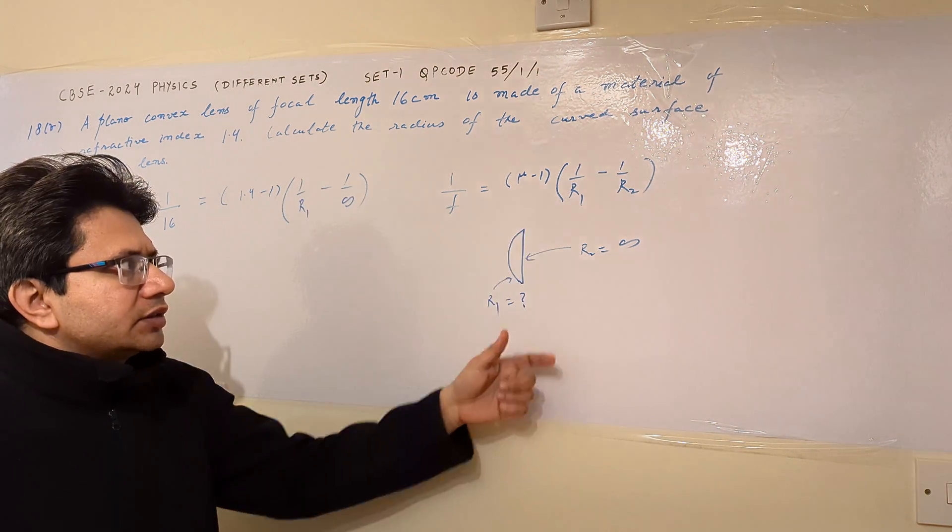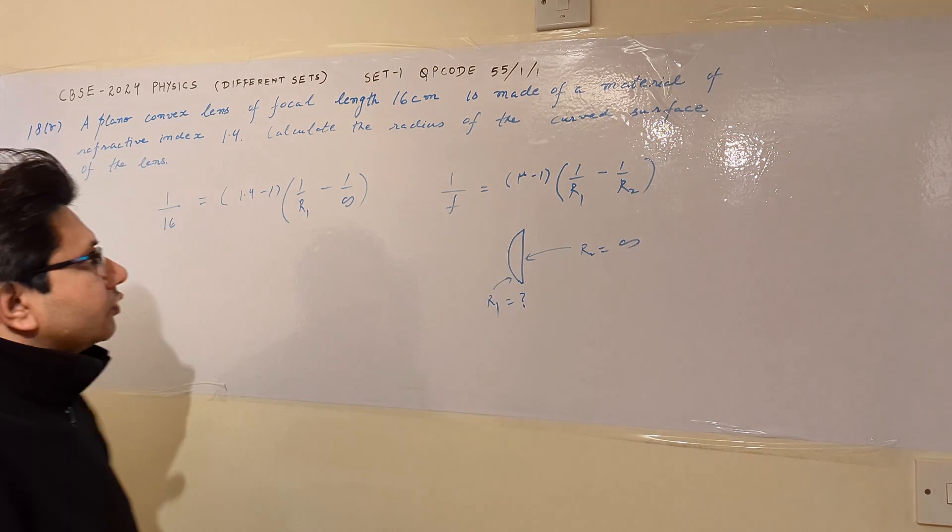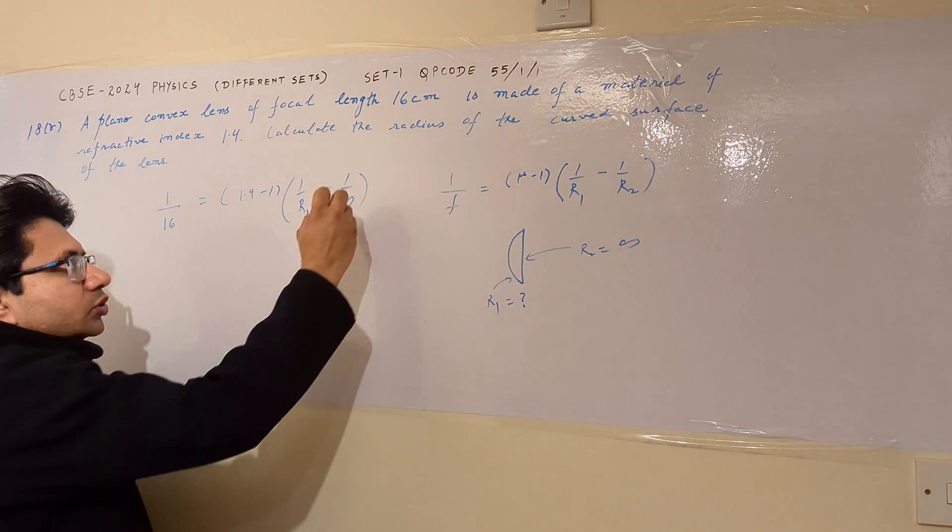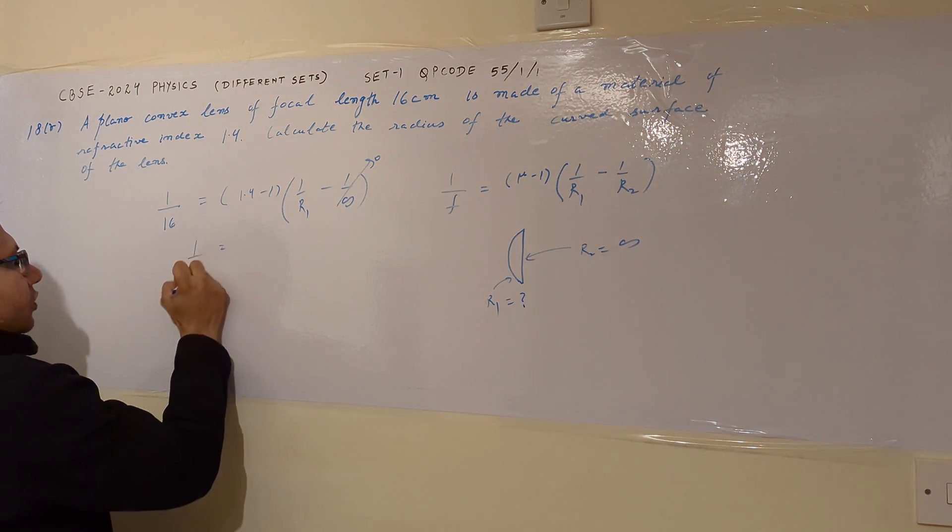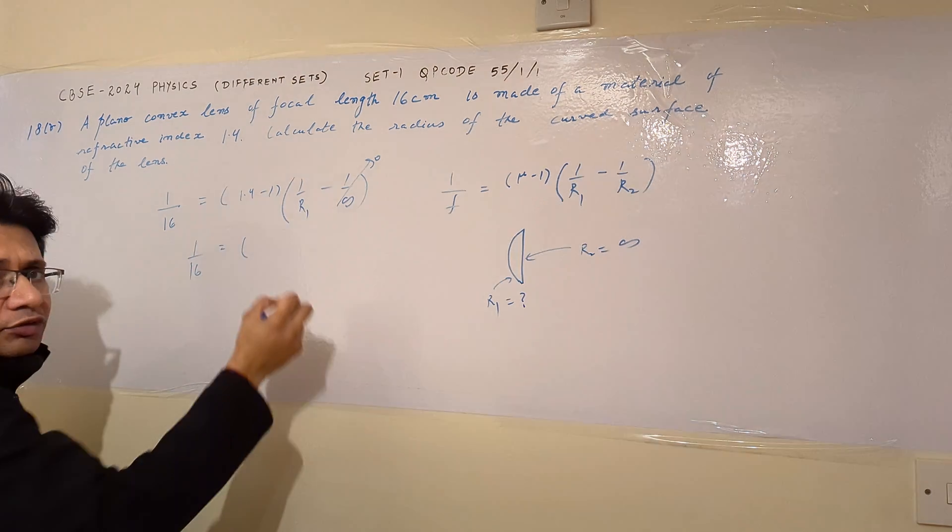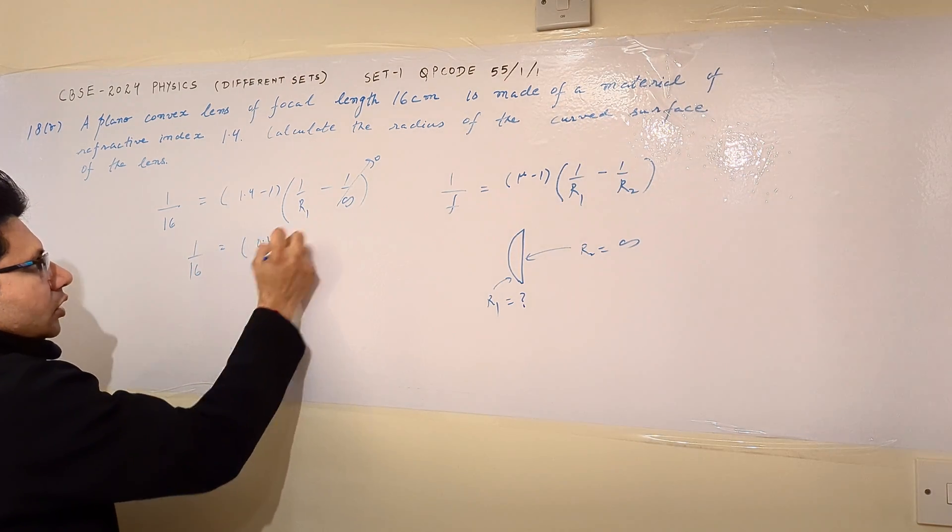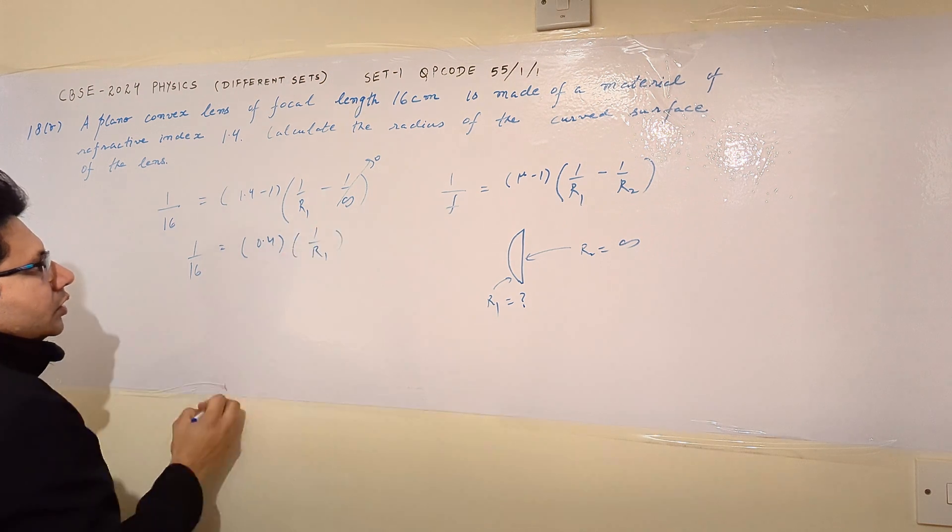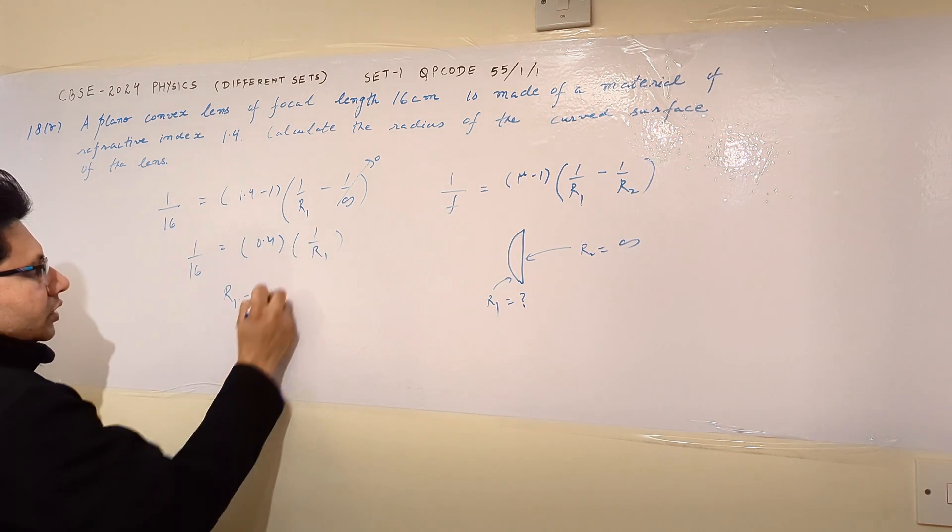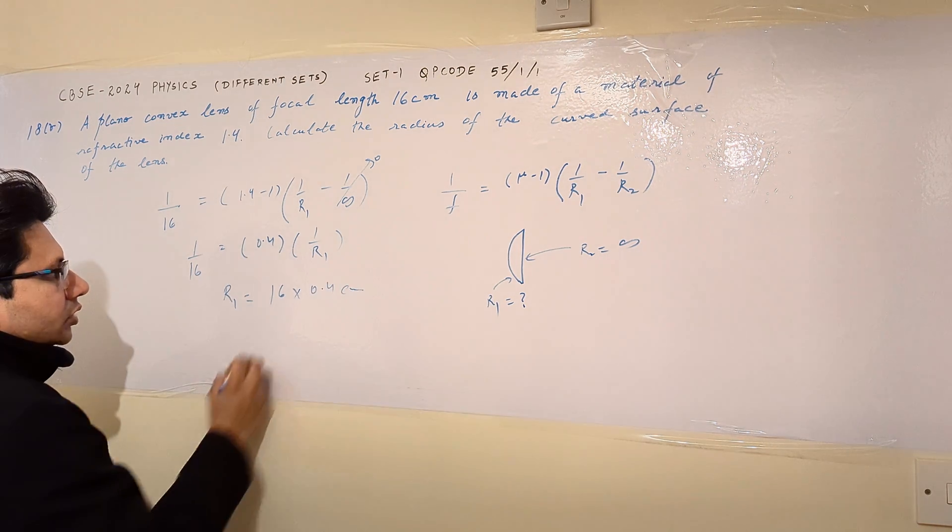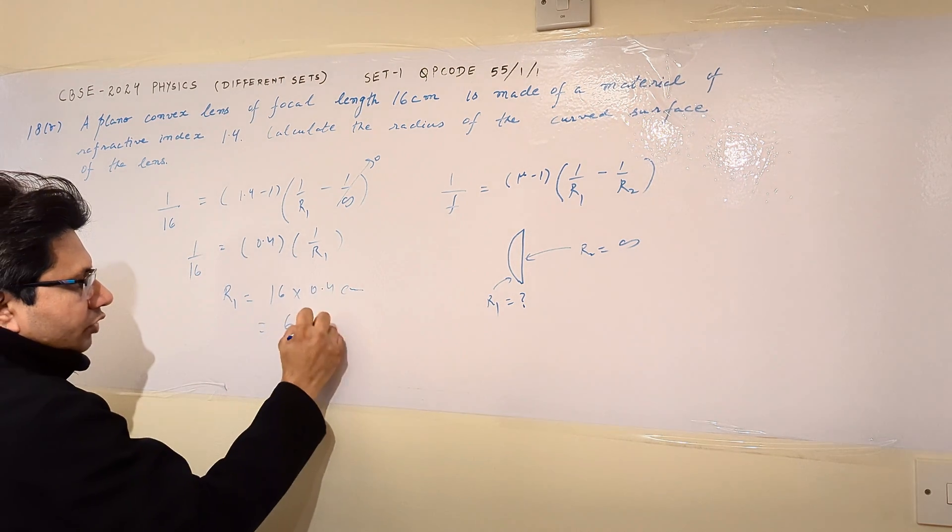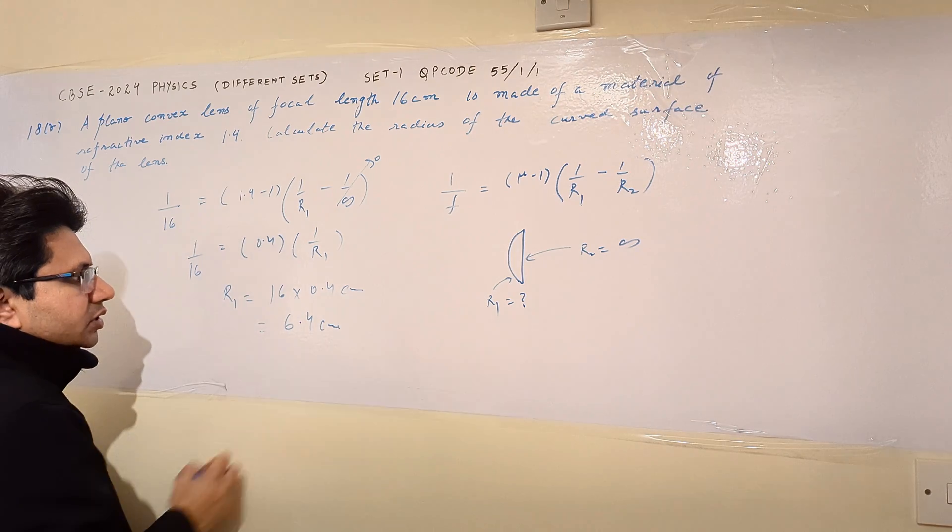1 upon infinite means 0, so this particular term becomes 0. After solving, 1 upon 16 equals 0.4 times 1 upon r1. We can see that r1 equals 16 multiplied by 0.4 centimeters, so this value comes out to be 6.4 centimeters.